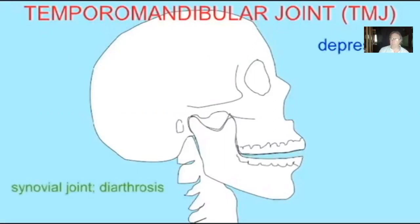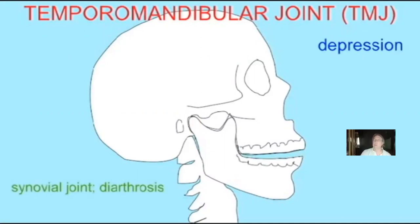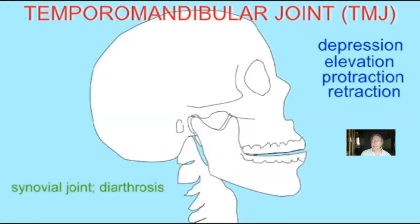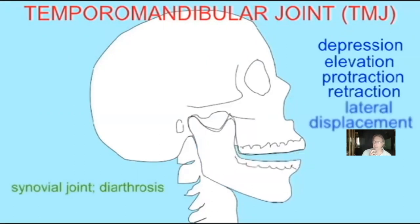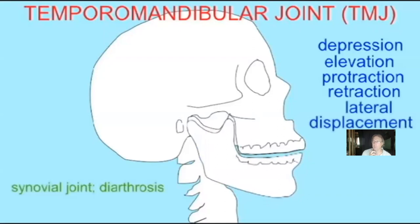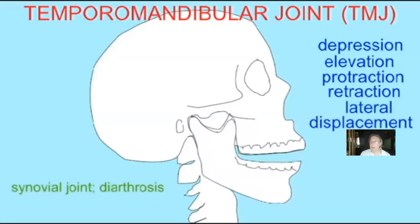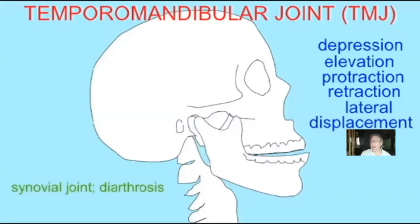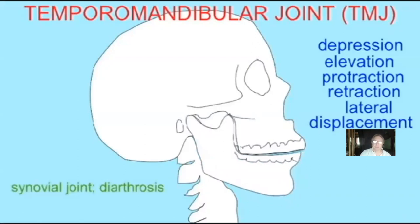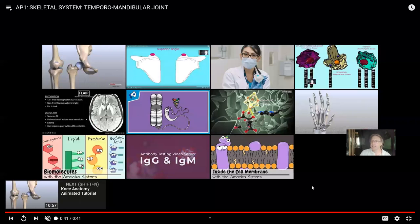For those concerned with the head — oral surgery, etc. — there is another joint: the temporomandibular joint, or TMJ. This allows us to depress the mandible when we open our mouths, elevate it to close, push the jaws outward for protraction, pull them back in retraction, and perform lateral displacement as well. So the TMJ allows a number of different types of movement.